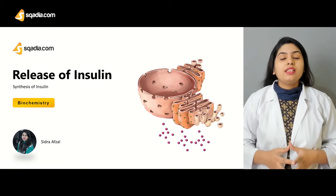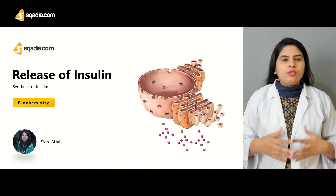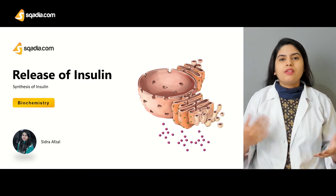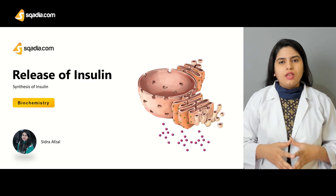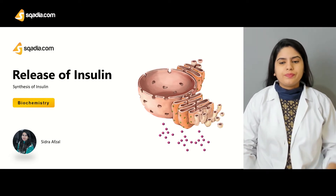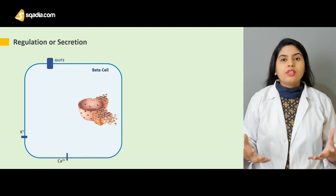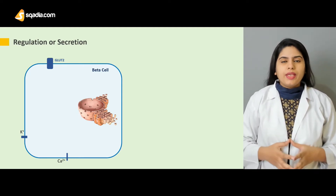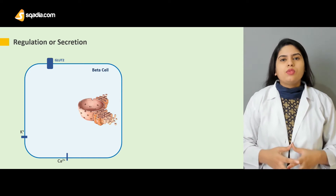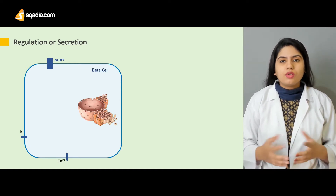Inside our body, everything is well regulated, so the synthesis and the release of insulin follows a step-by-step process — inside the ribosome, the rough endoplasmic reticulum, and the Golgi apparatus. Just like that, there is a proper mechanism through which insulin is released from the granules into the blood. We are going to see what the stimulus is and how it causes the release of insulin. When there is high glucose or a high level of amino acids in the blood, insulin will be released — but how is the signal transmitted?